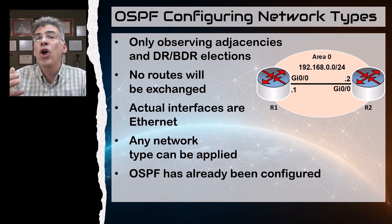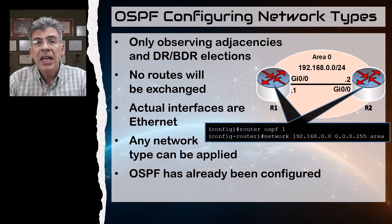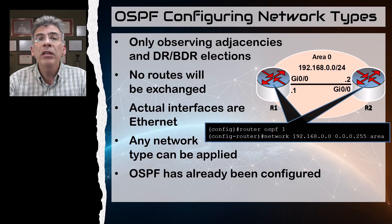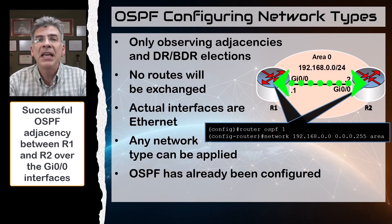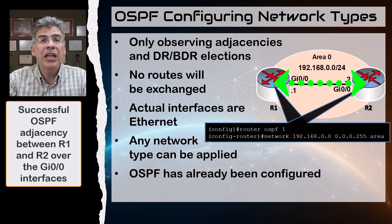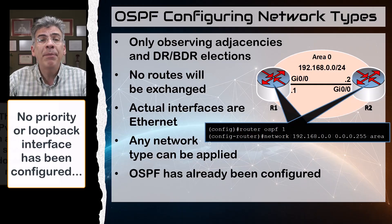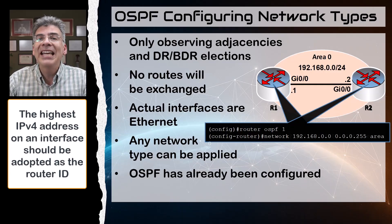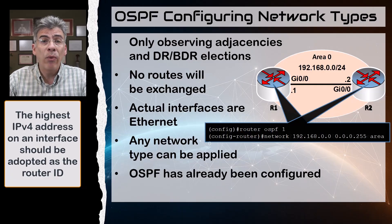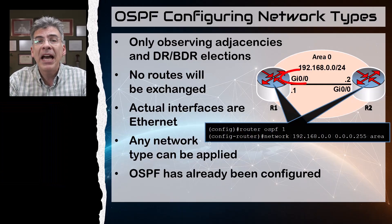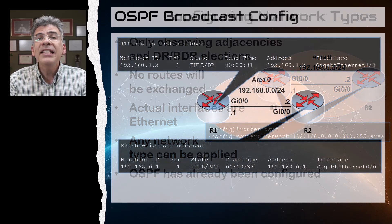For all network types we'll be looking at, we can assume that OSPF has already been configured like so. These commands applied to both R1 and R2 will create a successful OSPF adjacency over this link. We haven't configured the OSPF priority or a loopback address, so the router ID adopted by each router should be the highest IP on an active interface — which should be the IP address of the GigabitEthernet 0/0 interface of each router.